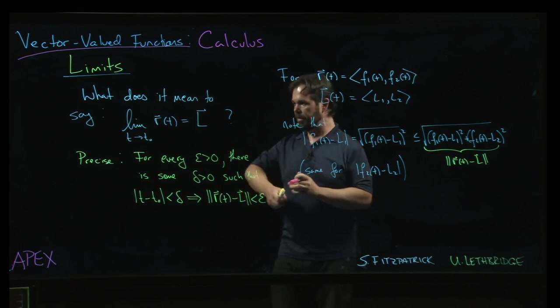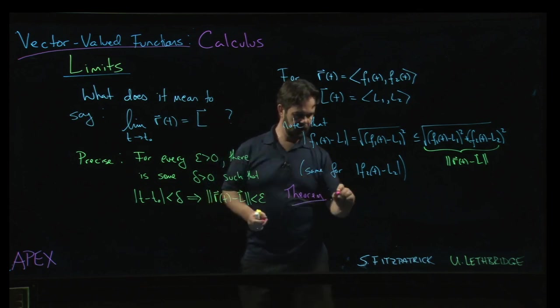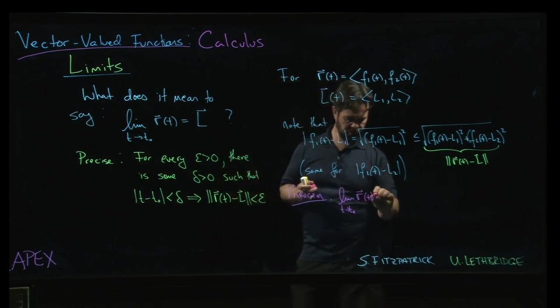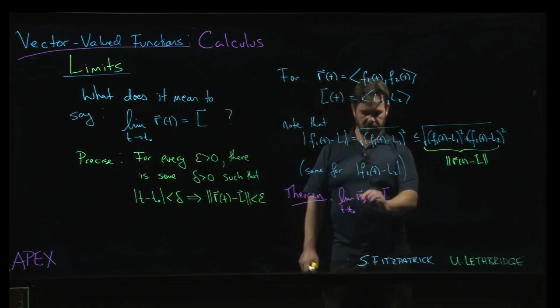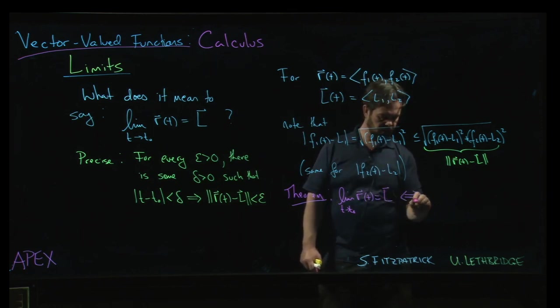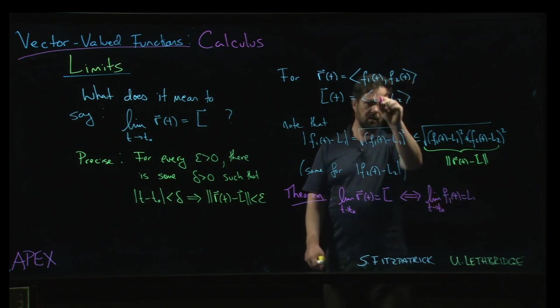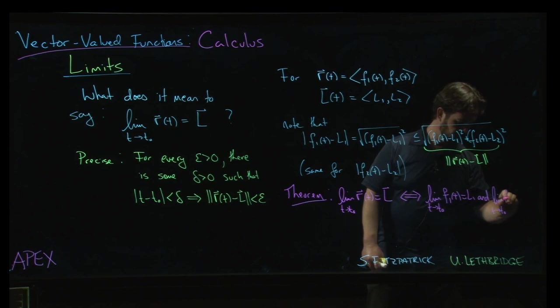And so you get a theorem. And the theorem basically says that—and I'm going to be a little bit lazy about how I write the theorem just in the interest of saving time or board space or wear and tear on my writing hand—the limit of the vector-valued function r(t) is equal to the vector L if and only if the limit as t goes to t0 of f1(t) equals L1 in this notation here. And the limit as t goes to t0 of f2(t) equals L2.